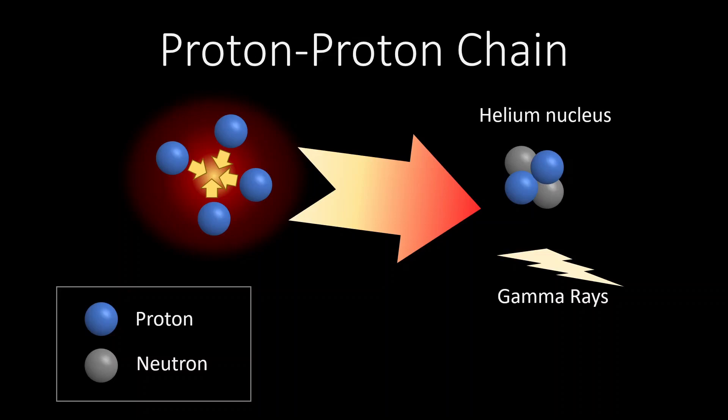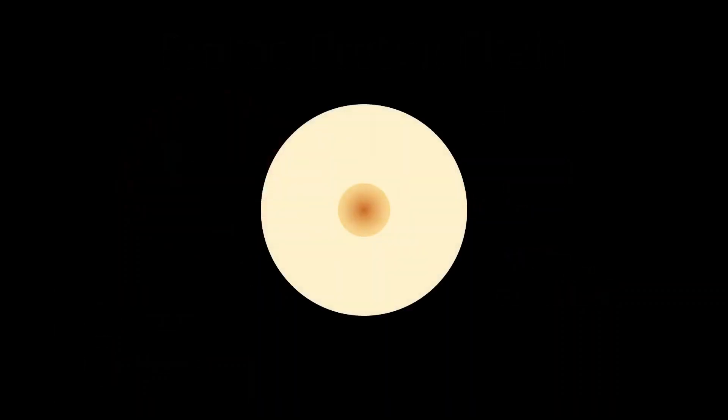Hydrogen fusion into helium takes place only in the central region of a star, where temperature and pressure are high enough. For this reason, the chemical composition of the stars gradually changes only in the central region. Hydrogen is gradually depleted while helium accumulates.